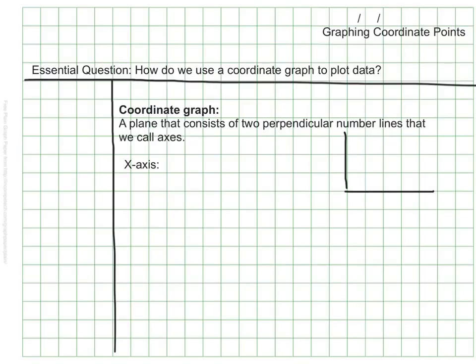One of our axes is the x-axis. The x-axis is the horizontal number line, so it's the one that's over here. That's the x-axis. This is also known as the independent variable.